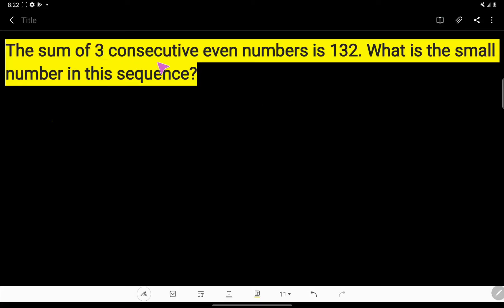The sum of three consecutive even numbers is 132. What is the smallest number in this sequence? Okay, consecutive means follow one after another.